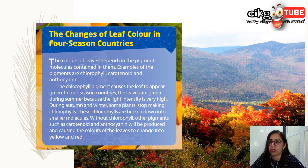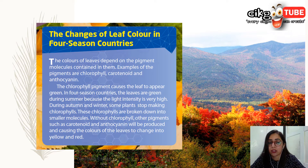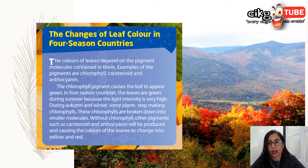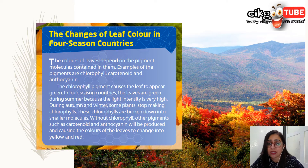Chlorophyll pigment causes the leaf to appear green. In fall season countries, leaves are green during summer because the light intensity is very high. But during autumn and winter, some plants stop making chlorophyll — it breaks down into smaller molecules. Without chlorophyll, other pigments such as carotenoid (the orange one) and anthocyanin are produced, causing leaf colors to change into yellow and red. We will see all these colors throughout this chapter.